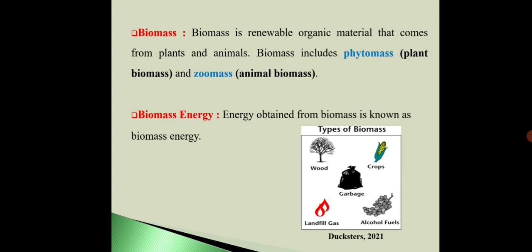What is biomass? It is renewable organic material that comes from plants and animals. Biomass includes phytomass, which means plant biomass, and zoo biomass, which is animal biomass. This biomass is a combination of waste material from plants and waste material from animals.